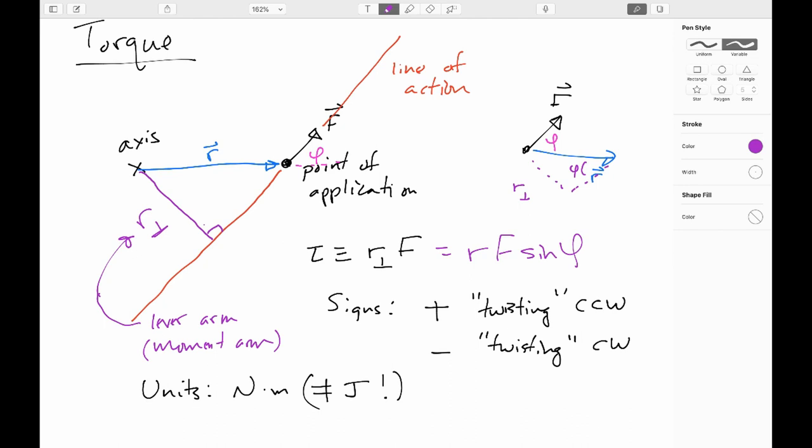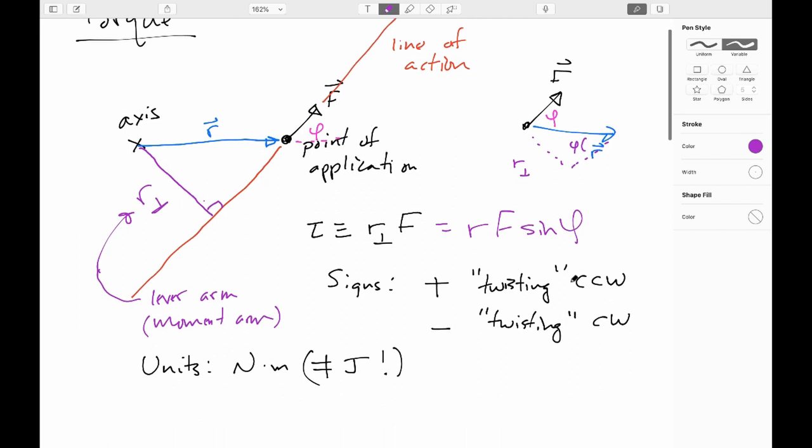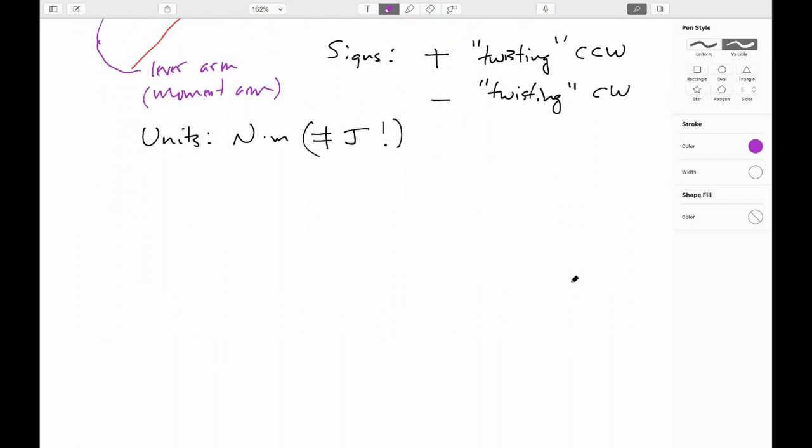So if you're totally in doubt, if you can at least draw a position vector and a force vector, just go put them tail to tail. They'll be R F sine phi. Now, instead of multiplying the sine phi by the R, we could just as freely multiply it by the F. And what would that look like?